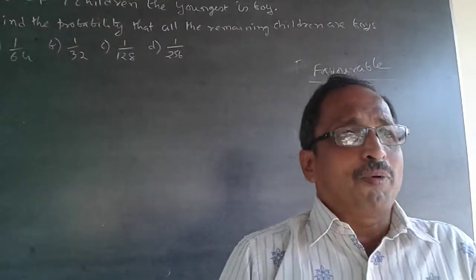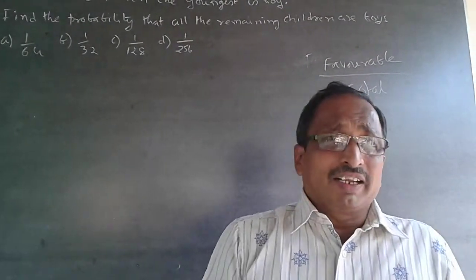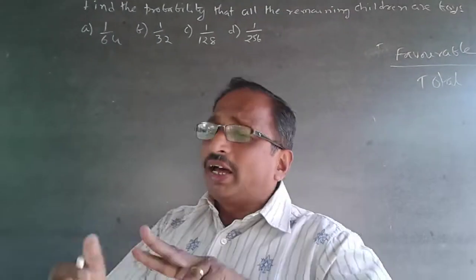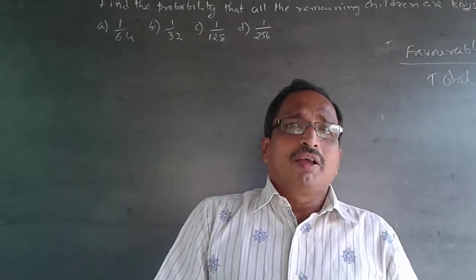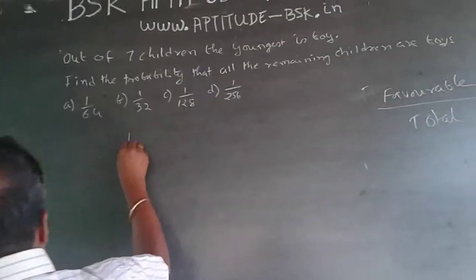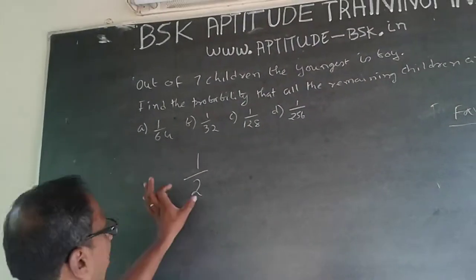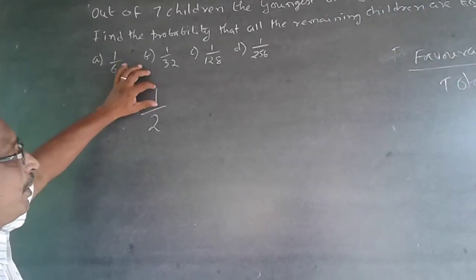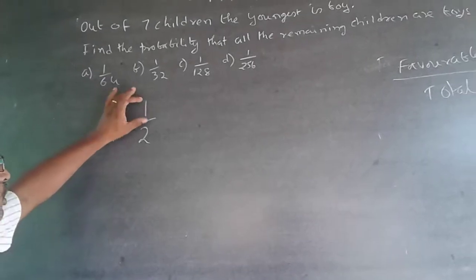Now, for a child to be a boy, it is 1 out of 2. Because it can only be either a girl or a boy. For the child to be a boy, it will be 1 out of 2. Because the total is 2. Boy and girl, the probability of a boy will be 1 by 2. Similarly, if I talk about a girl, it will also be 1 by 2.